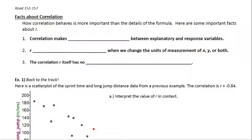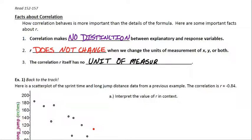A couple things you need to know about correlation. First of all, correlation makes no distinction between which variable is the explanatory, which variable is the response. It doesn't care at all. And it also doesn't change when you change the units of measurement. And r itself has no unit of measurement. It's kind of like a z-score. It doesn't care about the measurements on x or y, and it doesn't care who's on the x-axis or who's on the y-axis.